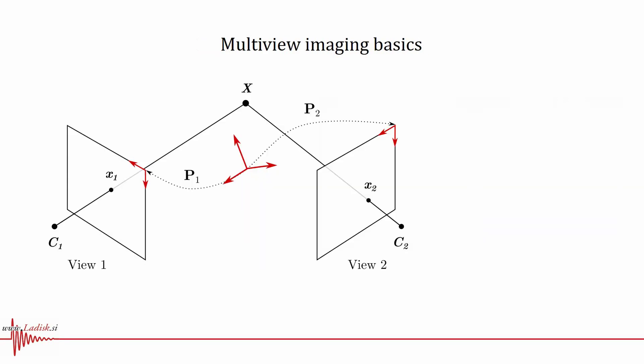Once the planar displacements of the measured object have been identified in multiple views, for example using digital image correlation, 3D motion can be reconstructed in the triangulation process.